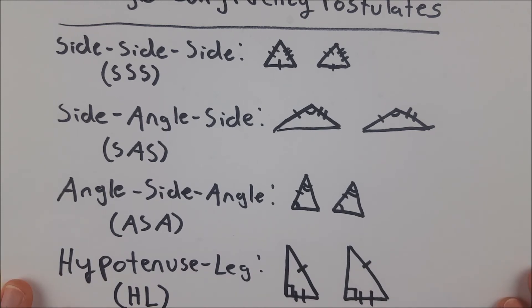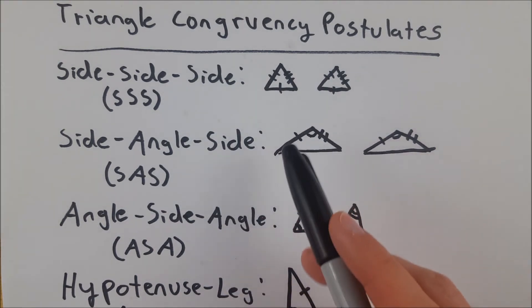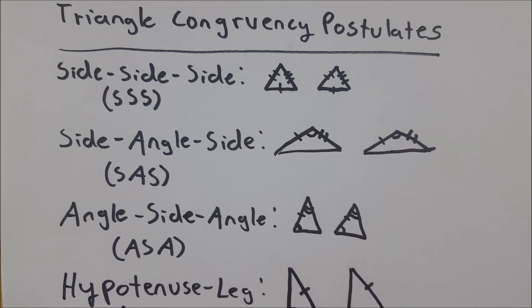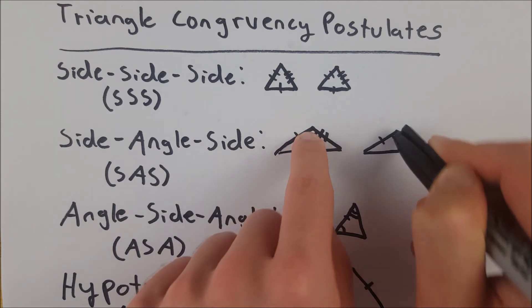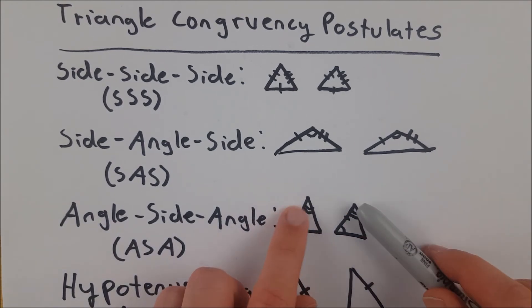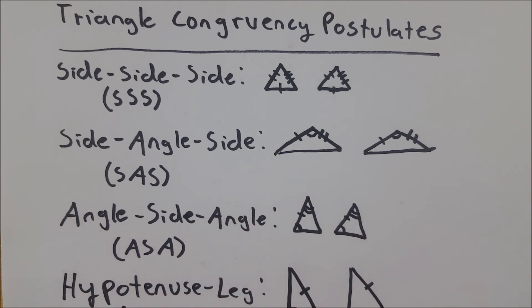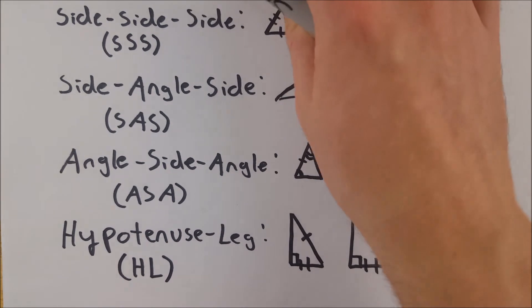And that's the four main triangle congruency postulates. Side-side-side says that if two triangles have three congruent pairs of sides, then those triangles are congruent. Side-angle-side says if you have two pairs of congruent sides and a pair of congruent angles included between those sides, the triangles are congruent. Angle-side-angle says if you have two pairs of congruent angles and the included pair of sides is congruent, those triangles are congruent. And hypotenuse-leg states that for two right triangles, if their hypotenuses are congruent and they have a pair of congruent legs, those triangles are congruent.